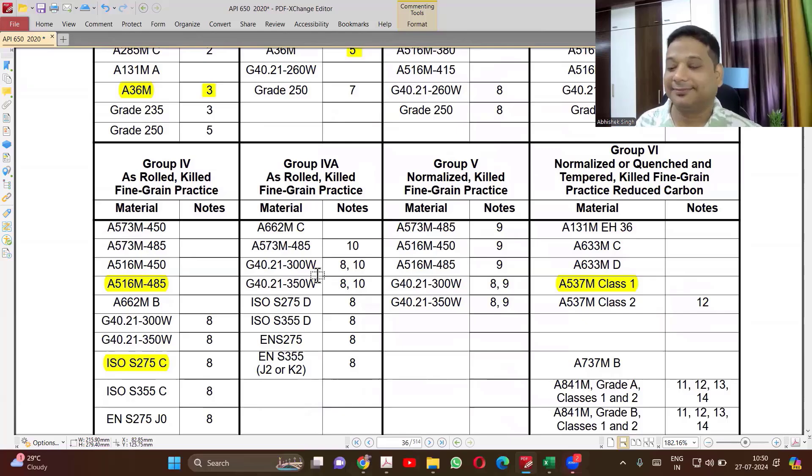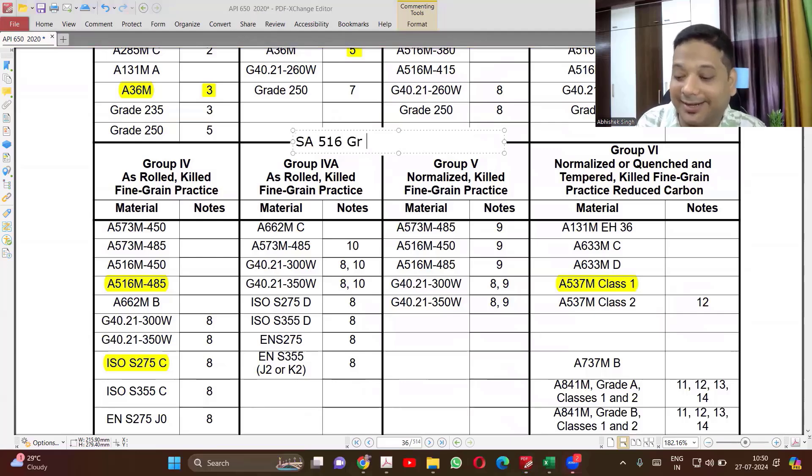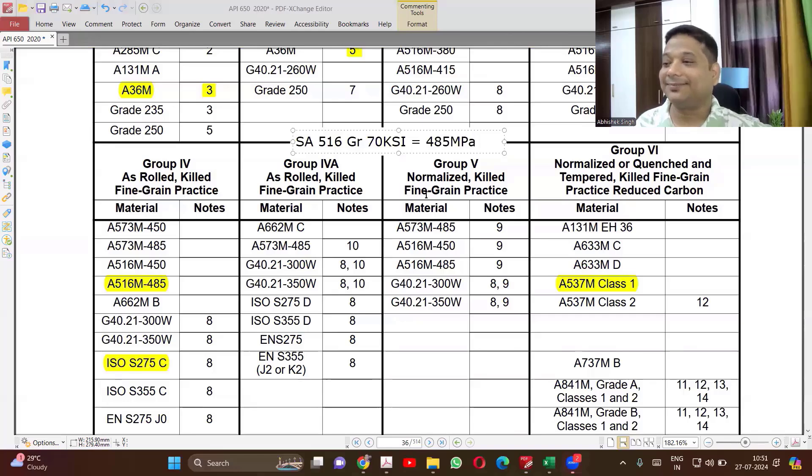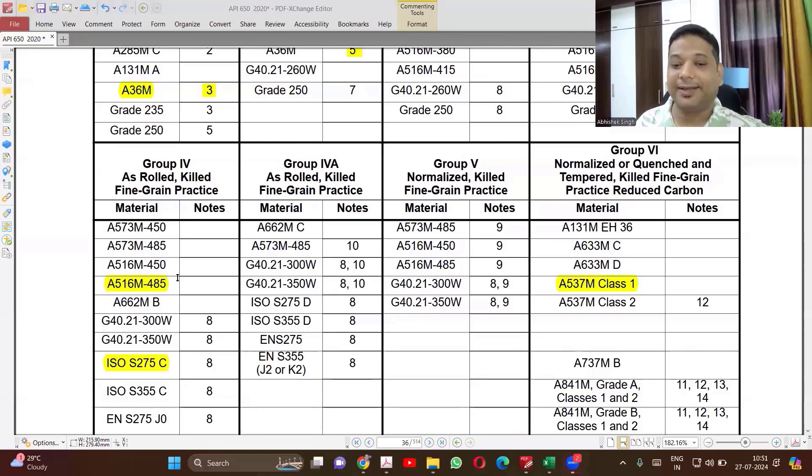What is 485? It is a tensile strength, right? You remember writing, most of you might be remembering SA 516 grade 70 we write, right? So 70 is nothing but tensile strength in KSI. If you convert in MPa it becomes 485 MPa. That is the difference. So sometimes you write in KSI, sometimes you write in MPa also. Writing KSI is the mainly practice which is followed. Very rarely you will find written in MPa but that is also acceptable.